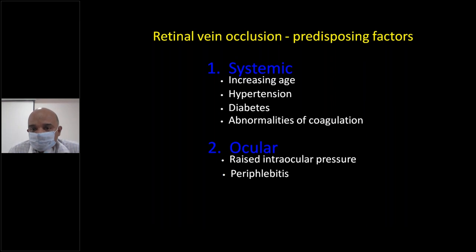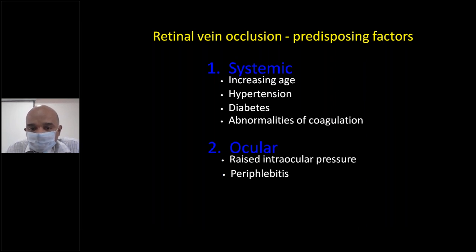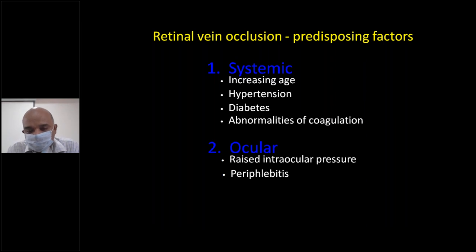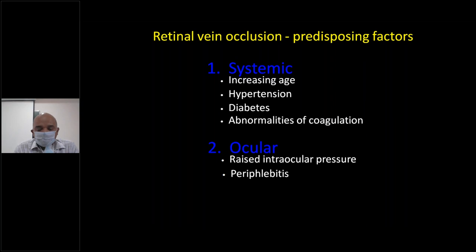What are the predisposing factors for vein occlusion? The main systemic factors are increasing age, hypertension, diabetes, and abnormalities of coagulation. Something has to press on the vein for occlusion to occur. When it presses, blood flow is affected, the coagulation cascade begins, thrombosis forms, and there is occlusion of the veins.